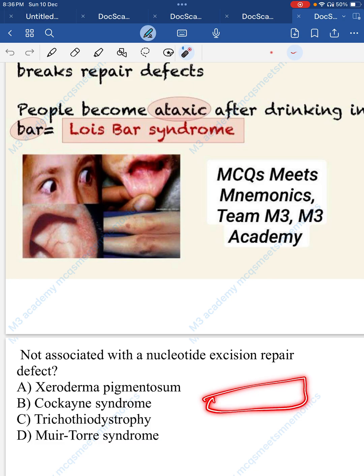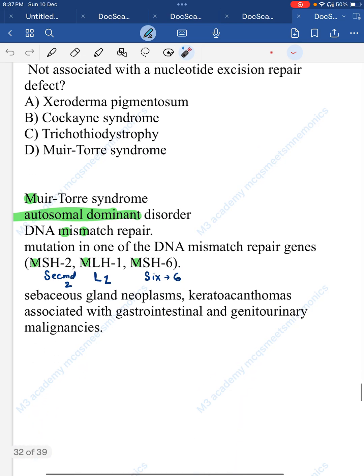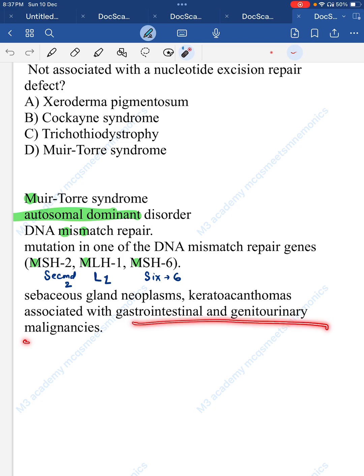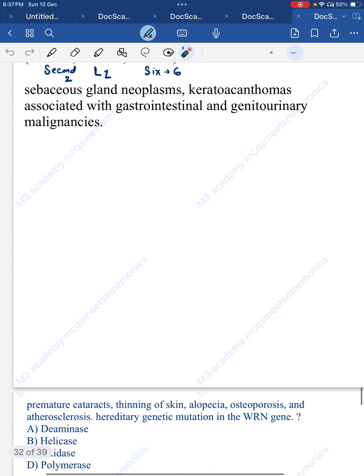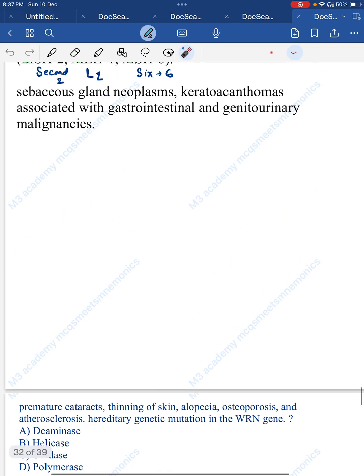Moore-Torre syndrome is autosomal dominant. HNPCC and Moore-Torre syndrome are autosomal dominant; the rest of DNA repair defects are mostly autosomal recessive. DNA mismatch repair defect genes include MSH2, MSH6, and MLH1. Associated conditions include sebaceous gland neoplasm, keratoacanthoma, and genitourinary and gastrointestinal malignancies.